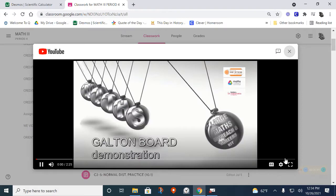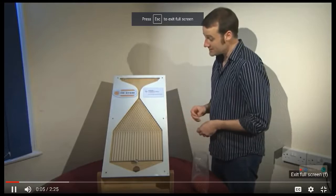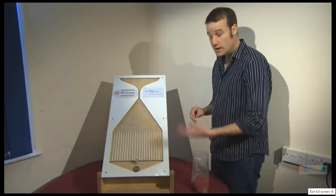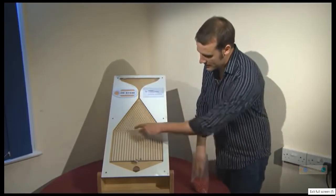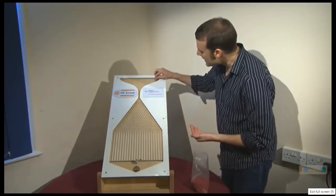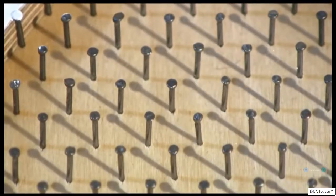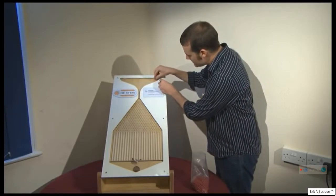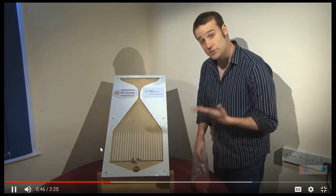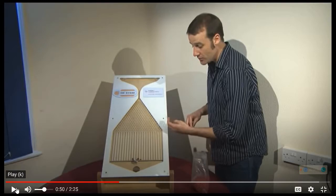It's called a Galton board because the first person to make one of these was called Galton. What you do is you take a ball, you drop it into the top, and it bounces off all these nails before eventually going into one of these categories. When the ball hits each nail, in theory, there is a 50-50 chance of it going left or right. And so each path is pretty much unpredictable. If I was to take two balls and put them in, even if I try and put them in exactly the same, they will end up in completely different positions. We cannot accurately predict where any given ball will go.